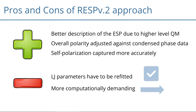A question was raised about the condensed phase component: the condensed phase calculation should be an implicit solvent calculation with a dielectric constant of 80. As to which dielectric method to use, we still have to test what fits our needs best.